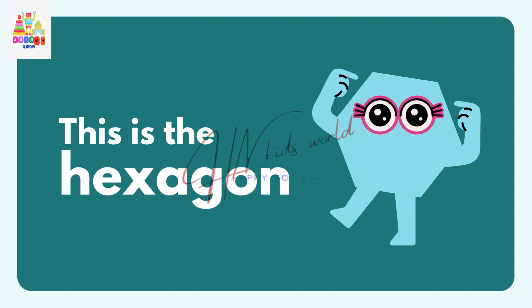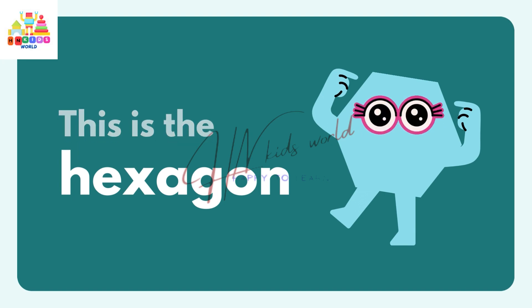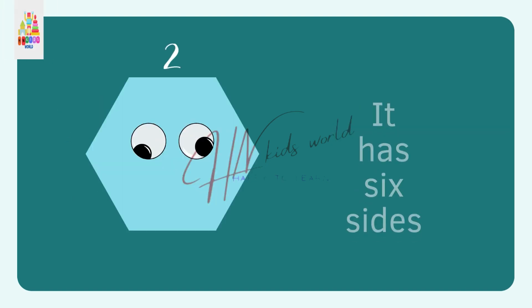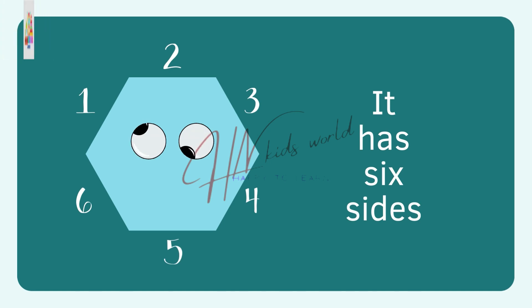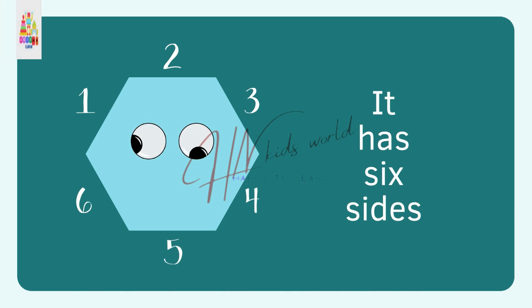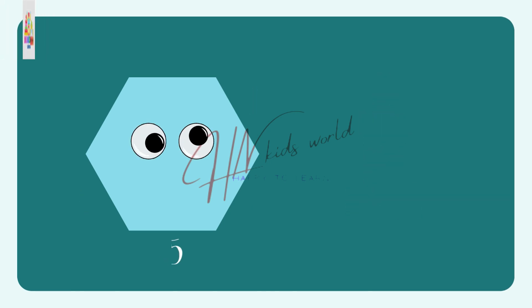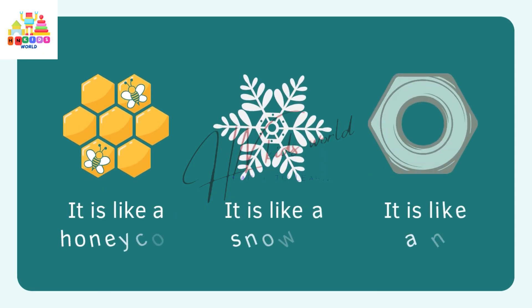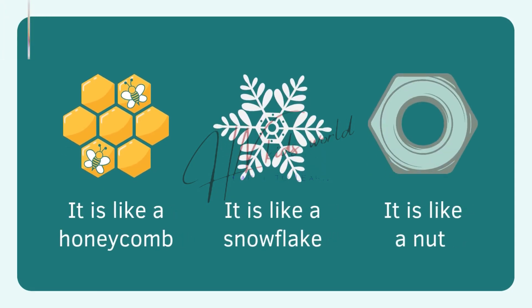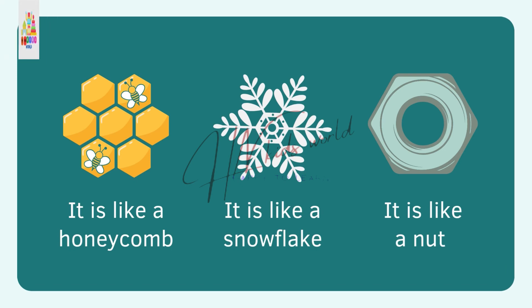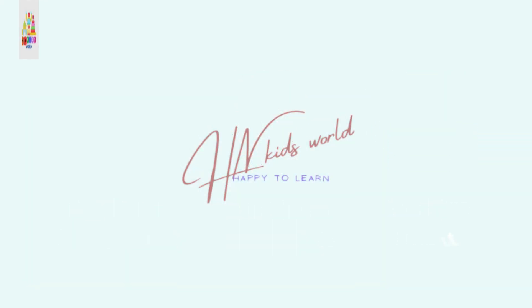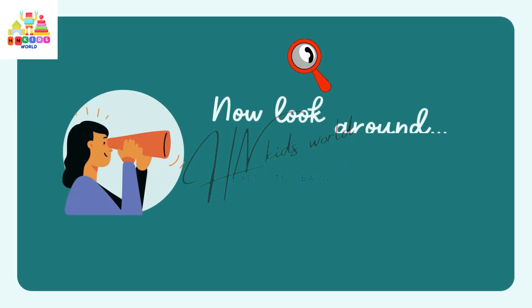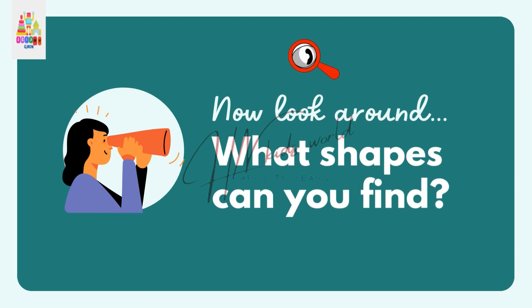This is the hexagon. It has six sides. It is like a honeycomb, a snowflake, and a nut. Now look around!